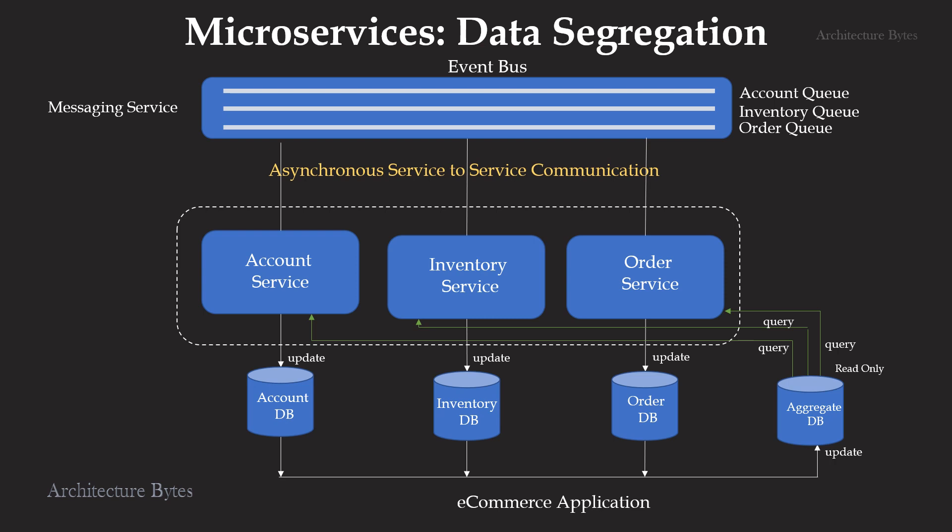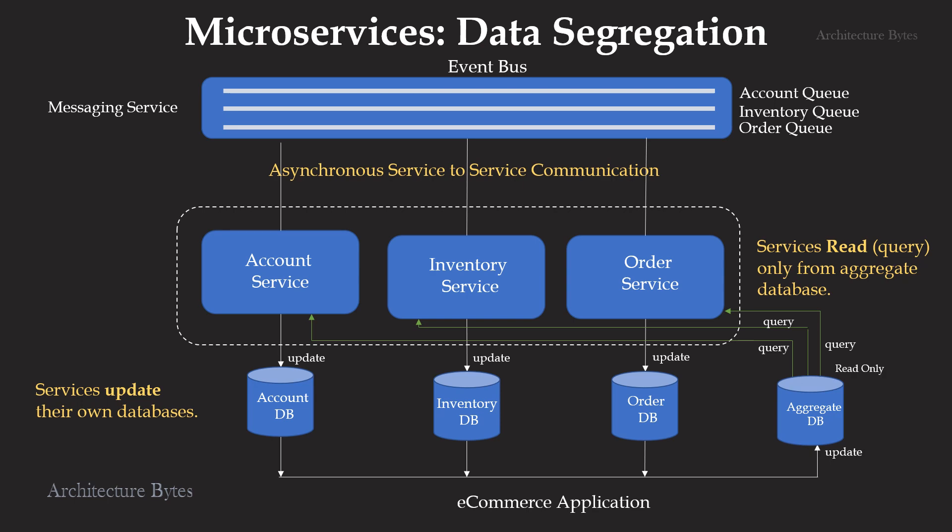Here's the same design with a slight variation. Individual microservices still own and update their own databases or schemas. However, they query the data from a read-only aggregate database. Individual databases send their updates to the aggregate database where it becomes available for all microservices to consume. The idea here is to simplify the querying pattern — updates happen in data silos while queries tend to span the data silos. It is important to remember that the database may not be RDBMS at all. Every service may use a different kind of database, like NoSQL for one service and a graph database for another. Your data access strategy will vary based on that.